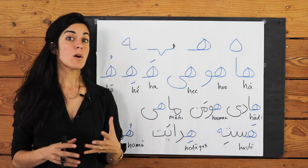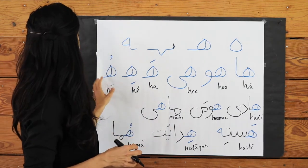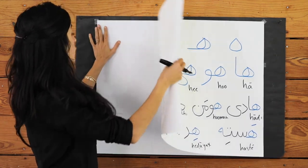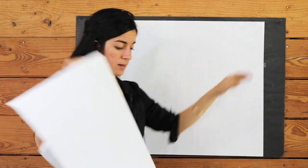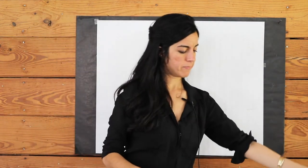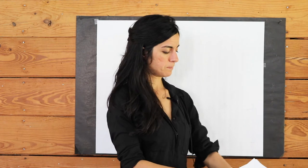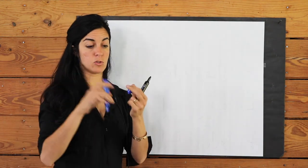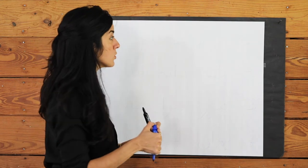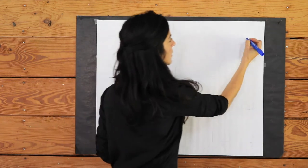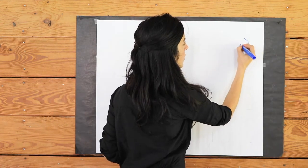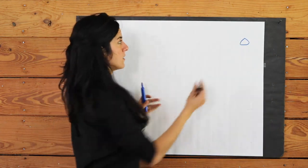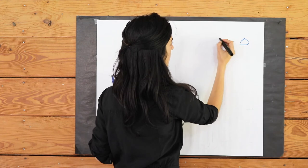Now let's go over some different words with the H sound and sneak in a few different versions so we can practice looking for it in different words. I'm going to highlight the H in blue so you can pick it out easily. The first version we learned is when H comes all by itself — so what are some words like that?